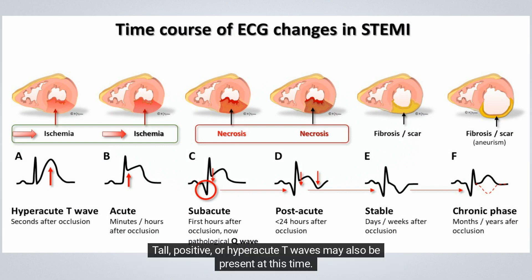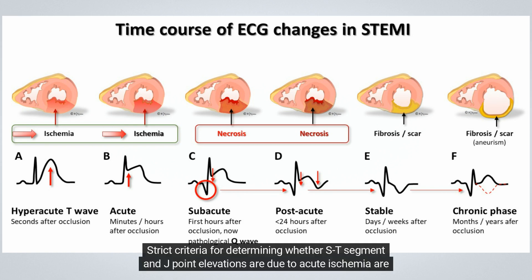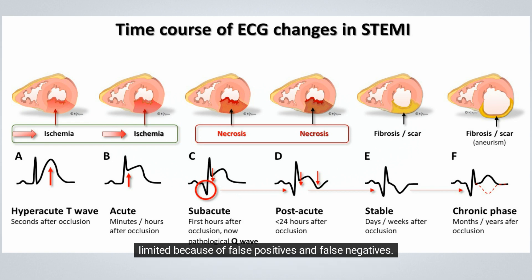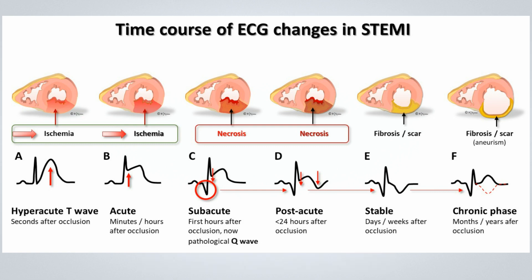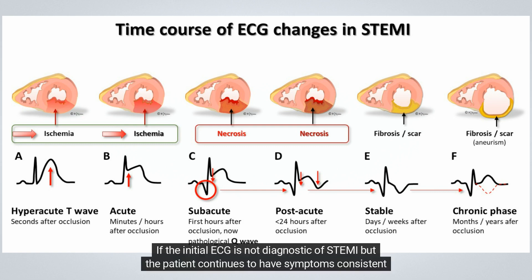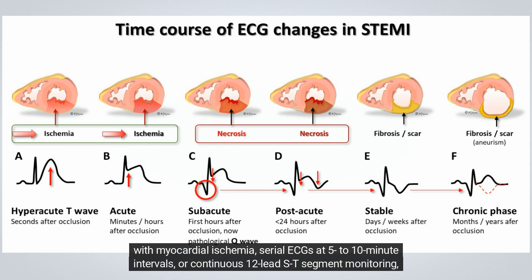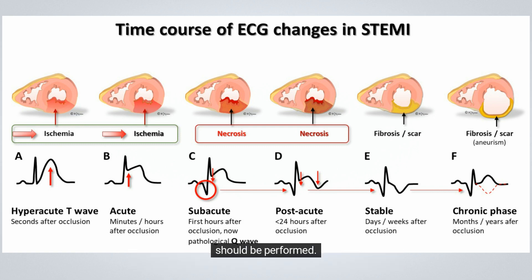Tall, positive, or hyperacute T waves may also be present at this time, and in some cases hyperacute T waves can precede the ST elevations. Strict criteria for determining whether ST-segment and J-point elevations are due to acute ischemia are limited because of false positives and false negatives. However, it is crucial for clinicians to be aware that ST changes in acute ischemia may evolve with the patient under observation. If the initial ECG is not diagnostic of STEMI but the patient continues to have symptoms consistent with myocardial ischemia, serial ECGs at 5 to 10-minute intervals or continuous 12-lead ST-segment monitoring should be performed.